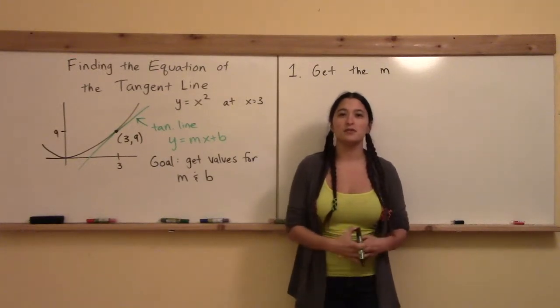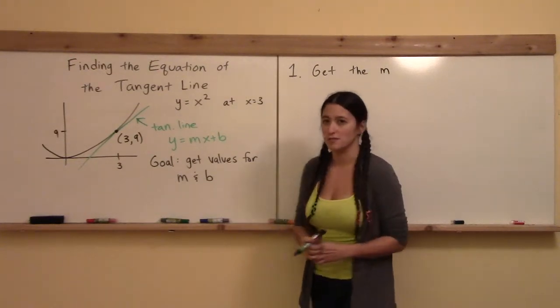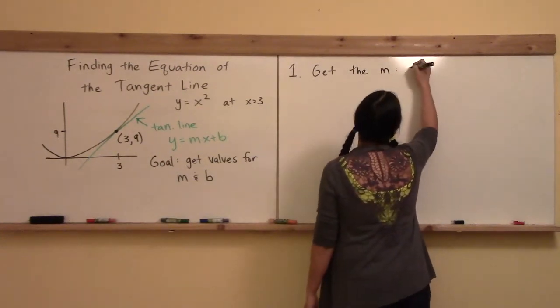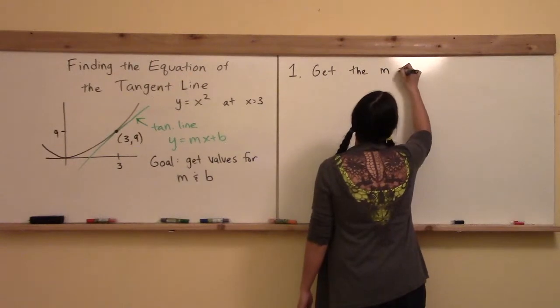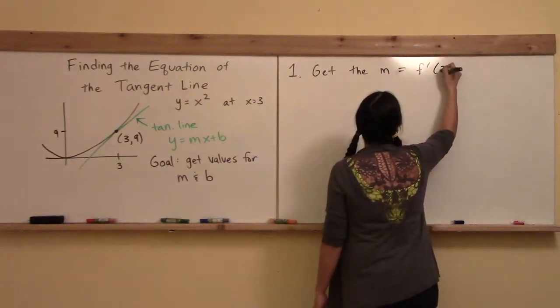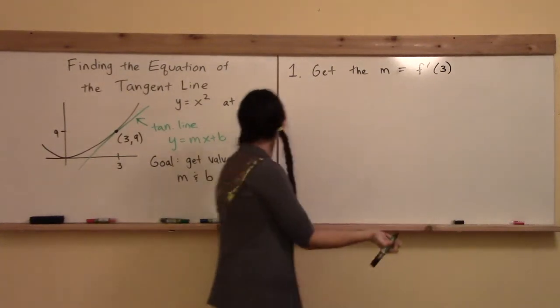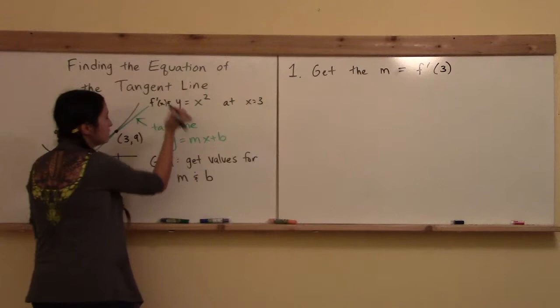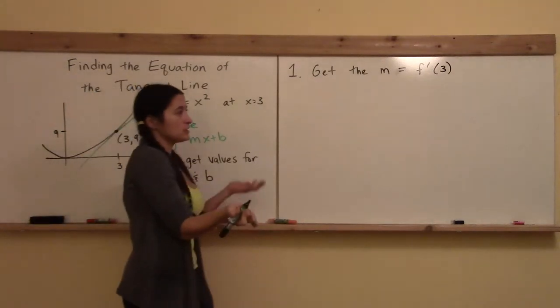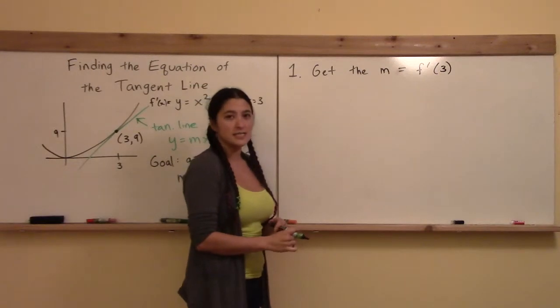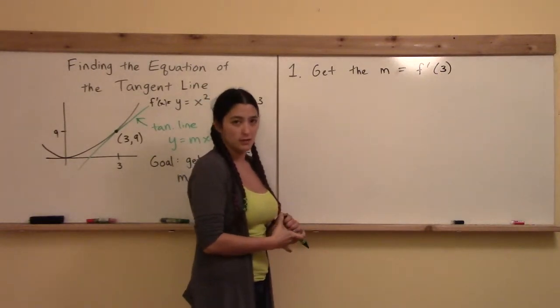So you may have seen those videos before you even watched this video. For step number one, you're going to have to get the derivative, sorry, get the slope m. This is going to be equal to the derivative of f at the point of interest. Okay, here our point of interest is 3, and let's refer to y also as f of x here. So basically, we're just going to get the value of m by finding the derivative of our f of x and then evaluating it at 3.